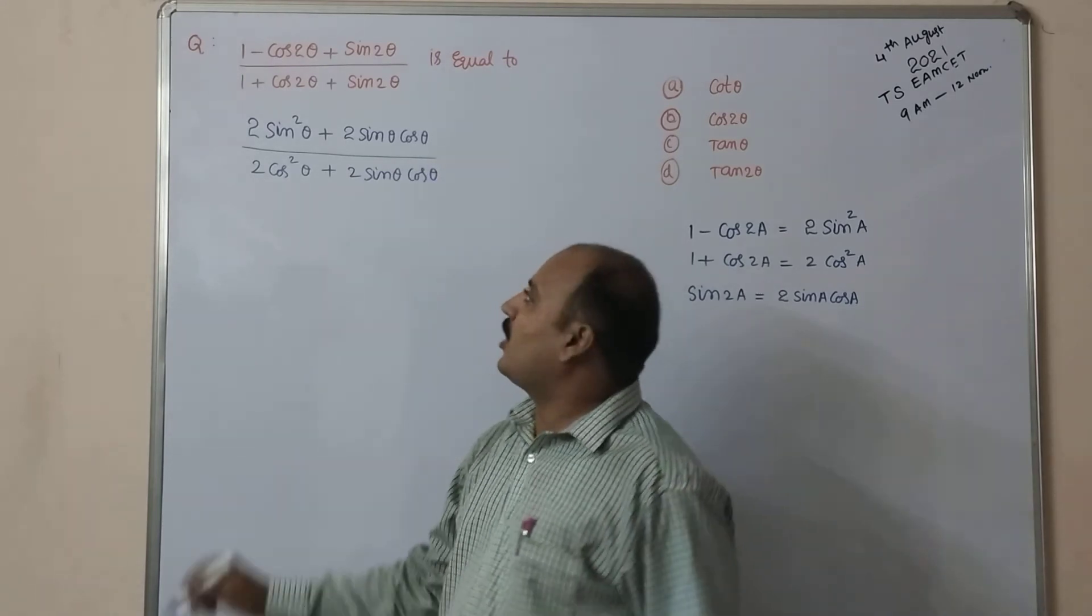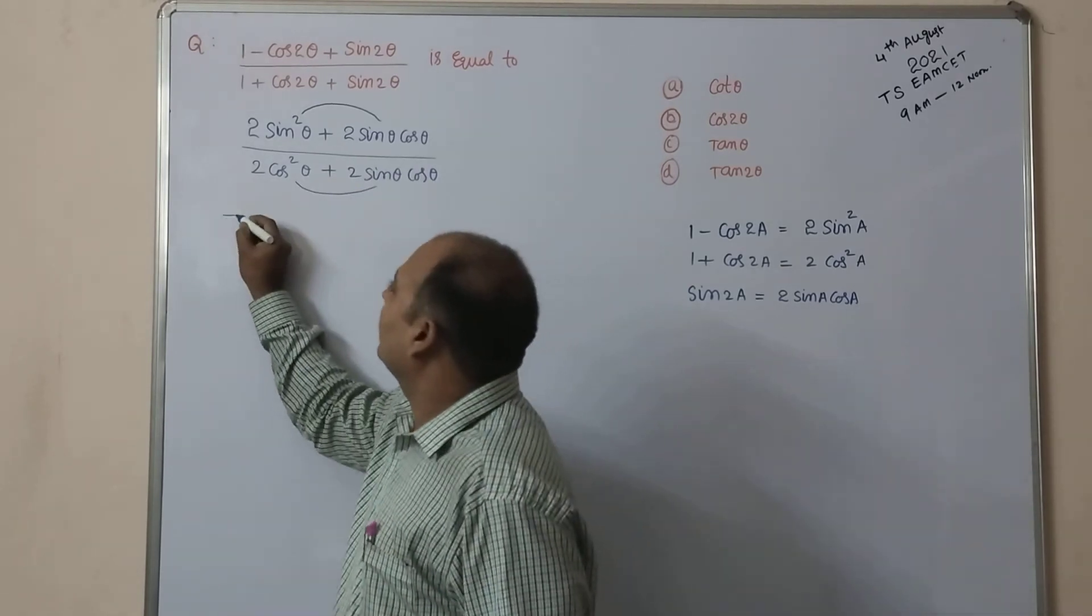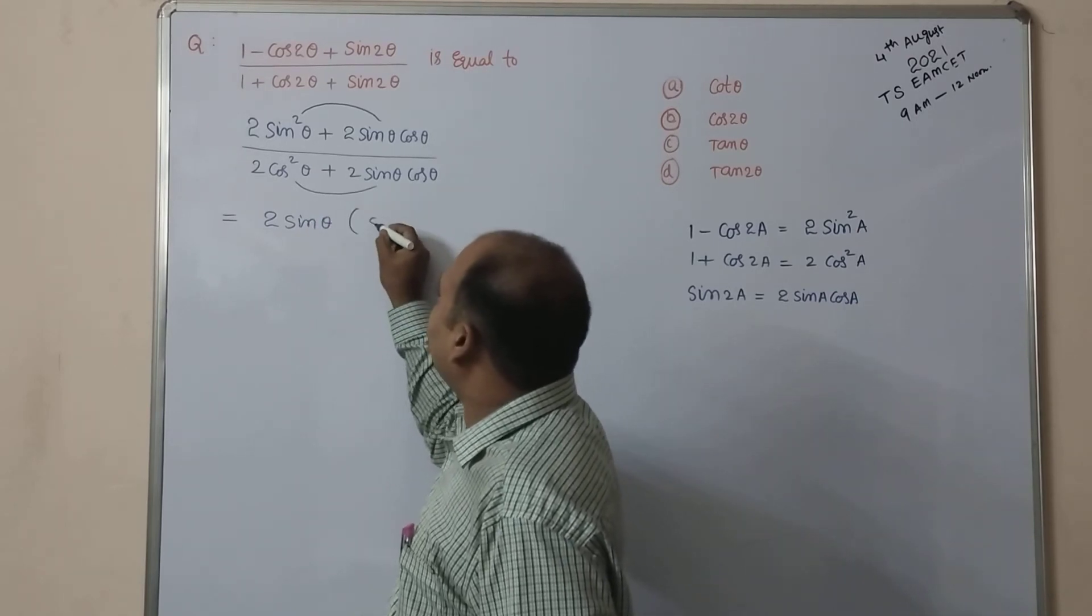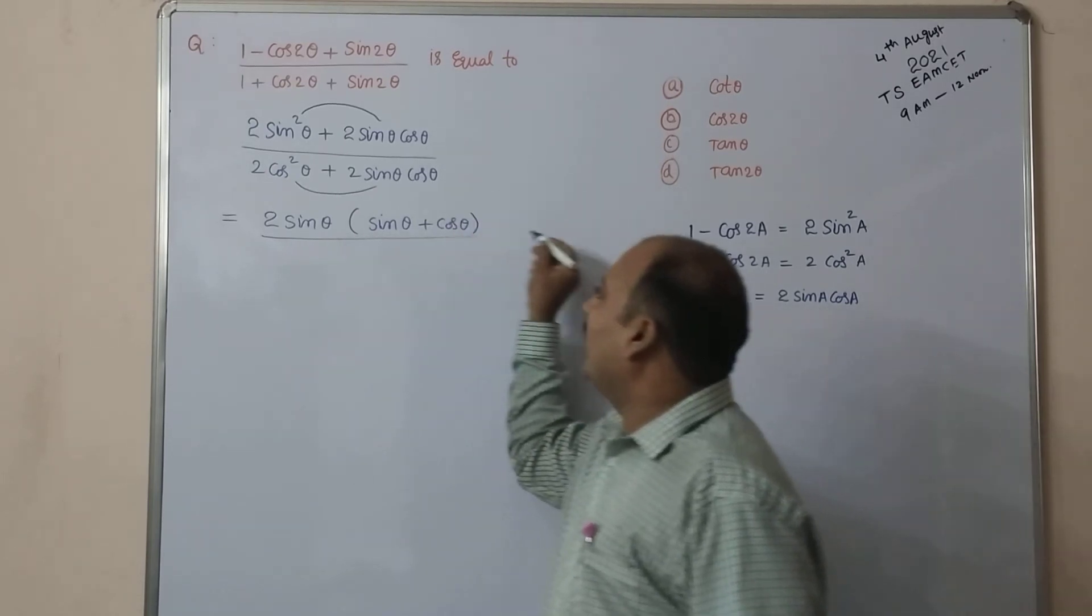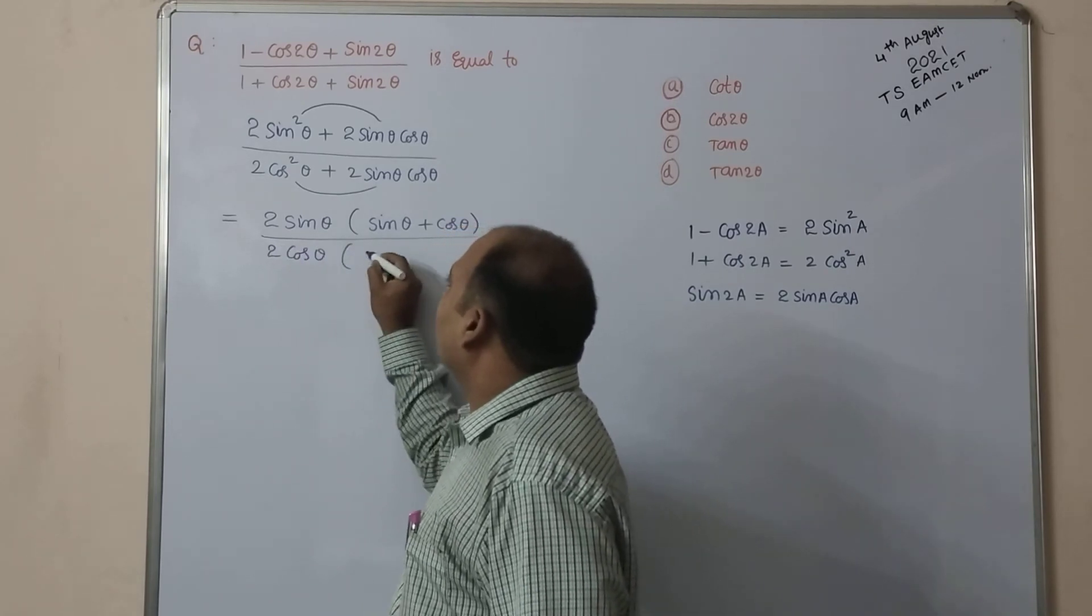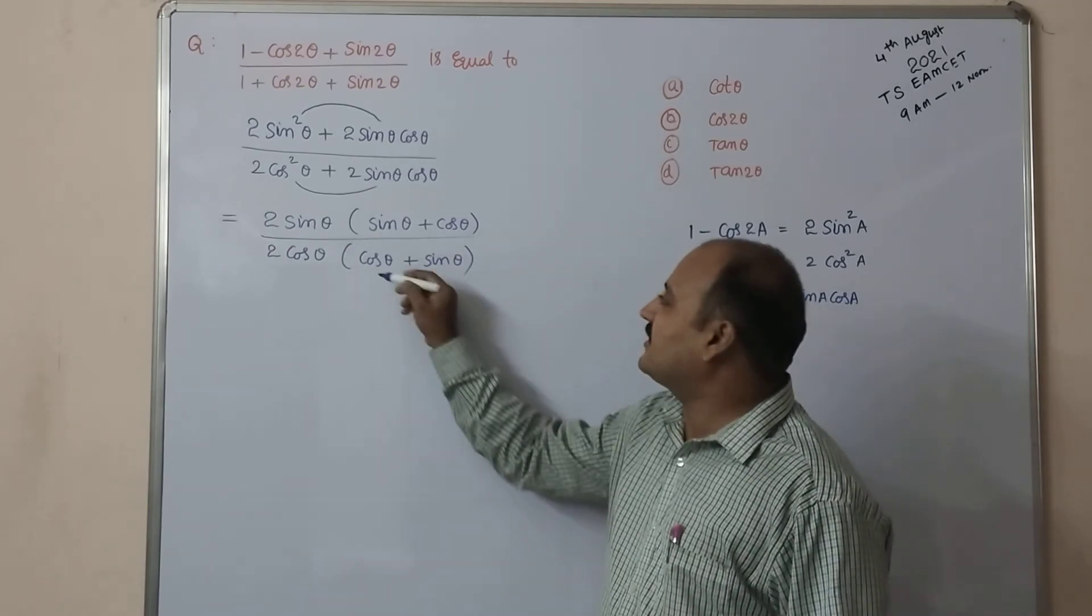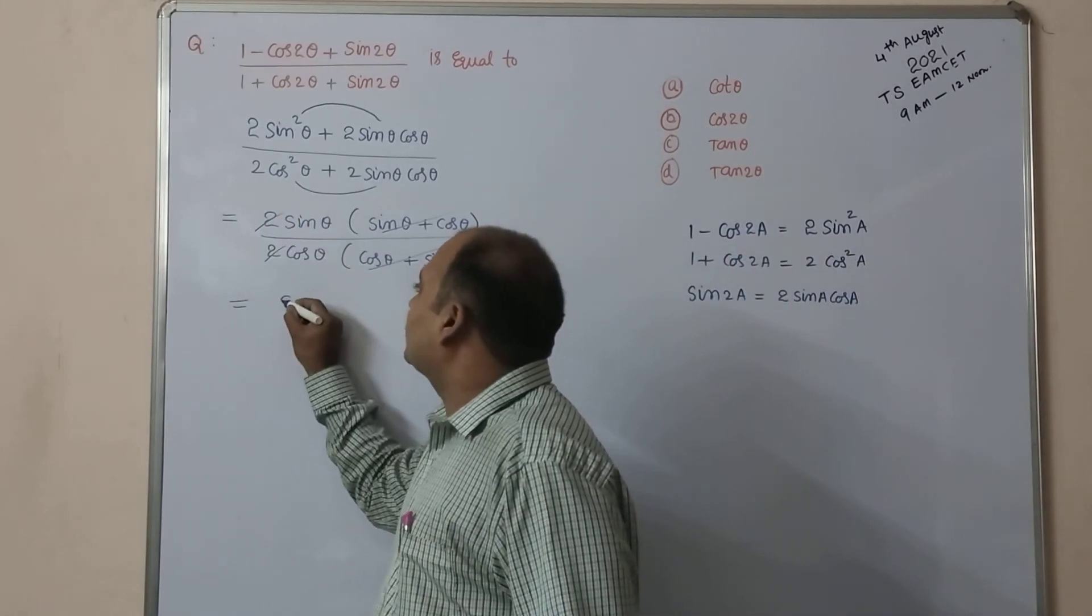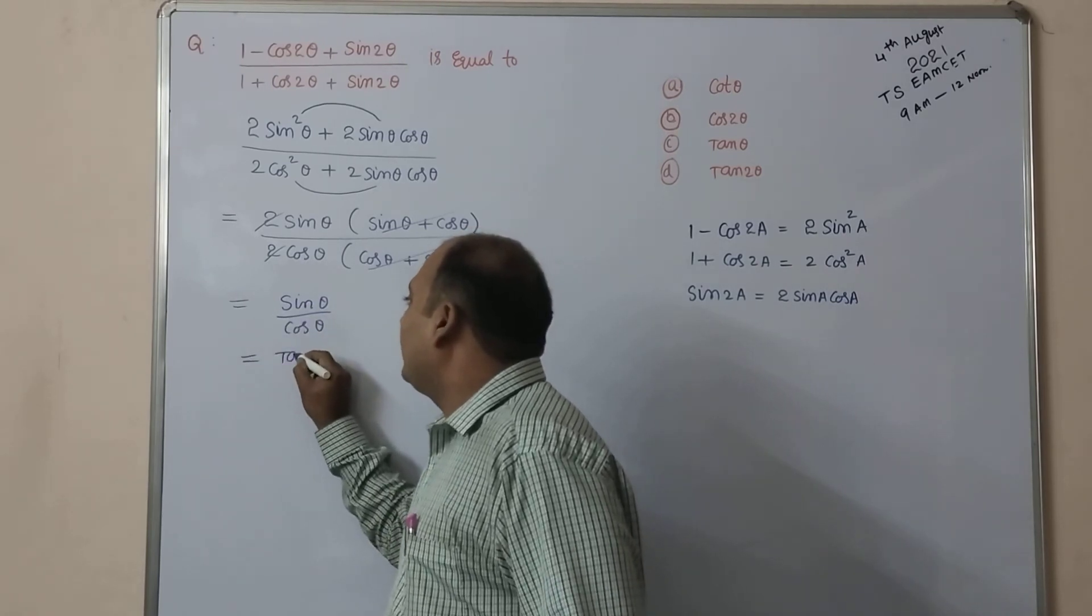So 2sin²θ plus sin2θ, 2sinθ cosθ divided by 1 + cos2θ, 2cos²θ plus sin2θ, 2sinθ cosθ. Here also I wrote a formula in terms of theta. After that, from numerator take common 2sinθ, from the denominator 2cosθ. If we take out 2sinθ from the numerator, the rest of the term in the numerator is sinθ + cosθ. Similarly, if we take out 2cosθ in the denominator, cosθ + sinθ. Sinθ + cosθ, cosθ + sinθ both are same one, we can cancel it. Even 2 also get cancelled. So the ratio of sinθ by cosθ is equal to tanθ, which is one of the options, option C.